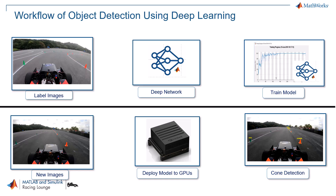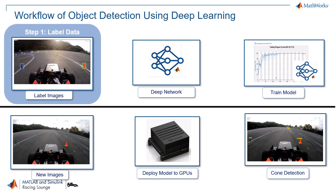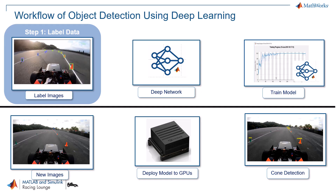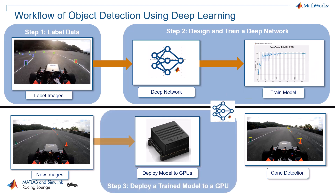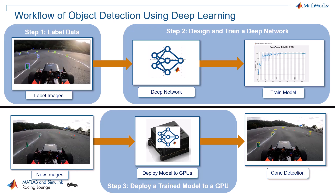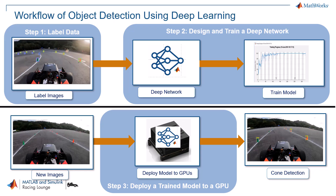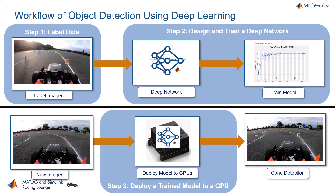This workflow has three main steps. First, data labeling, which means going through your images and marking the objects you want to detect. Next, model training — here you design a deep learning network and train it using the labeled images. Finally, deployment. Once the model is trained, you can use tools in MATLAB to deploy it onto hardware, like an embedded GPU in a car, so the model can detect cones in real-time.